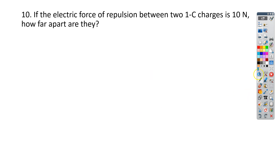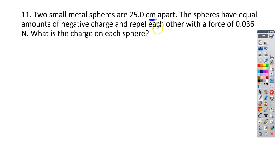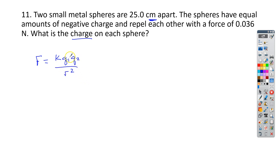For number 11, we have something very similar. We have two small metal spheres 25 centimeters apart — watch out there. The spheres have an equal amount of negative charge and repel each other with a force of 0.036 newtons. Now we're looking for charge. Using Coulomb's law: force equals k times q1 times q2 all over r squared. But since the charges are the same, the equation becomes f equals k times q squared all over r squared.